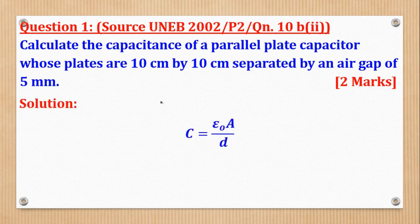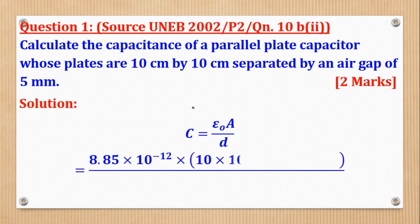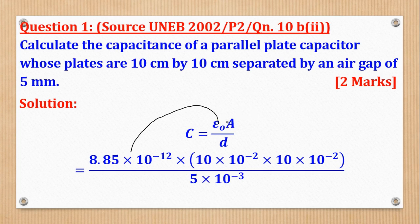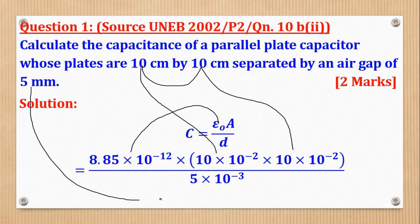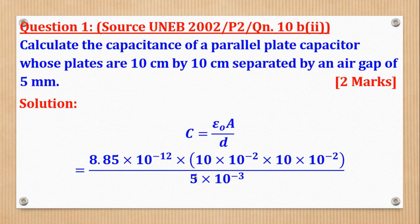The first thing to do is to quote the formula. Then you substitute. Like I said, this is a constant. Then this area will be given by this times this. But remember, area must be in meters squared. Therefore, convert these to meters to give you that. Then also, the separation must be in meters. So convert it to meters to give you this. Then from there, you can use the calculator to come up with the answer. So this will be the capacitance in farads.